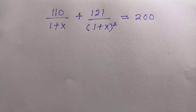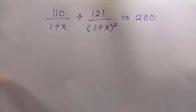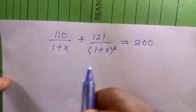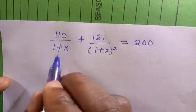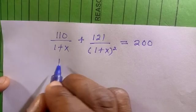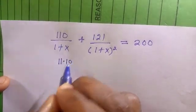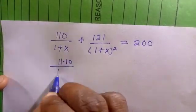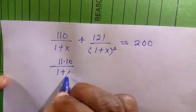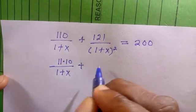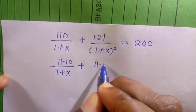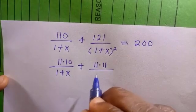Welcome to another video. Here is our math challenge for today — I want to find X in this problem. One thing can be written as 10.11, then divided by 1 plus X plus Y; this is 11.11 divided by 1 plus X, all squared, equals 200.